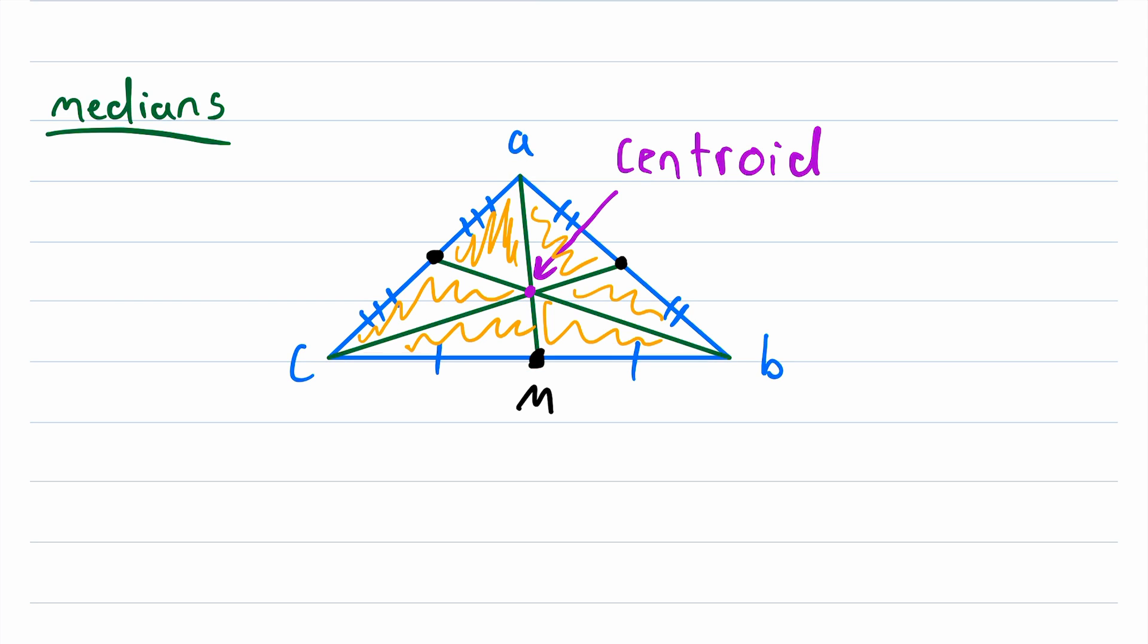the opposite side is the side that does not intersect the vertex. So if our median has an endpoint at the vertex A, then the opposite side is the side that doesn't intersect A. If our median has an endpoint at the vertex C, then the opposite side is the side that doesn't intersect C. And so on.